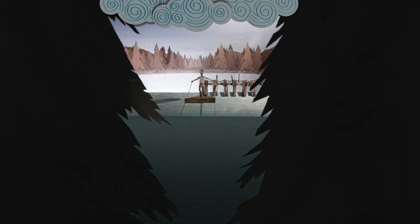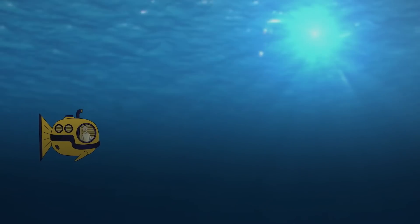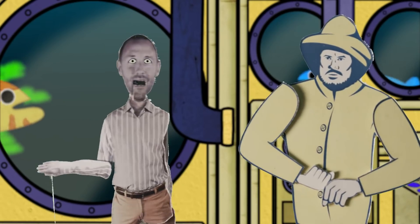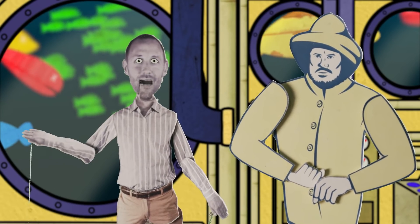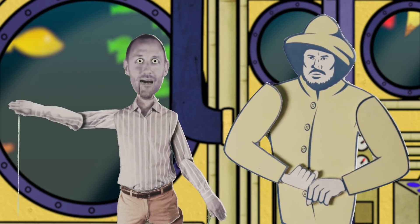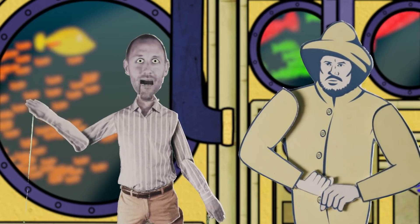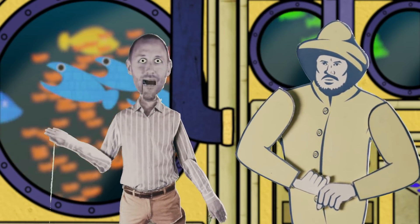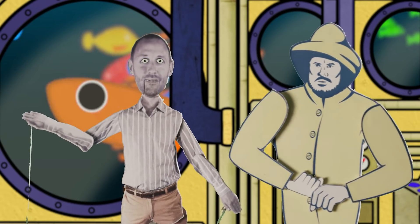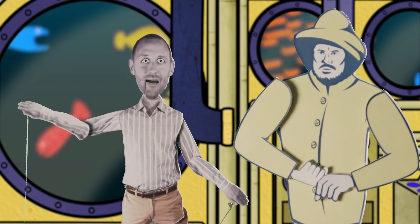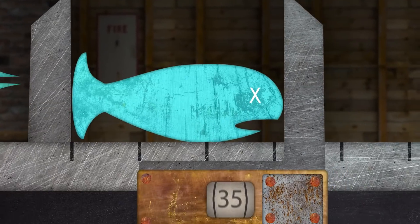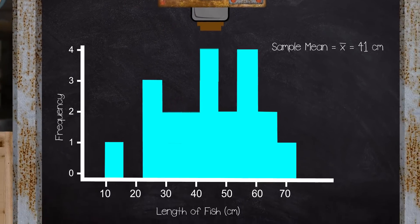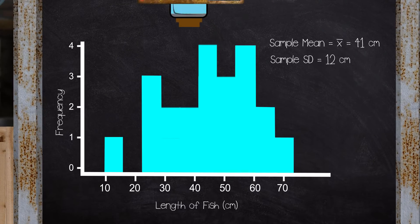Take this lake as an example. Sustainable fishing regulations dictate that we must let fish mature, and fishermen may only begin fishing once there is convincing evidence that the mean length of fish in the lake is greater than 35 centimeters. Of course, we cannot measure all the fish in this lake, so instead we take a random sample. Let's take a look at a sample of 25 fish. We can see that for these 25 fish, the sample mean length is 41 centimeters, and the sample standard deviation of the length is 12 centimeters.